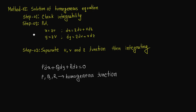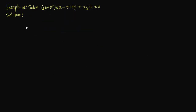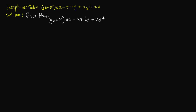Let's move on to the problem so the concept is clear. Solve: (yz + z²)dx − xz dy + xy dz = 0. We compare this to the total differential equation p dx + q dy + r dz = 0 to identify p, q, and r.